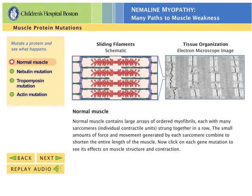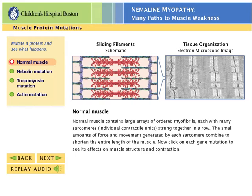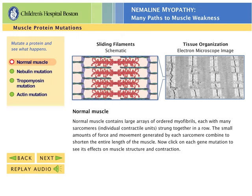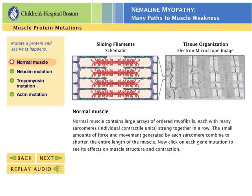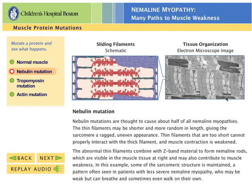Now click on the buttons to watch the thin filament in action, first in normal muscle, and then in patients with mutations causing nemaline myopathy. See how the three gene mutations affect the filament differently, yet all lead to weakened muscle contraction. In all three cases, also notice how the abnormal thin filaments and Z-bands have formed dark clumps called nemaline rods. These rods further interfere with the orderly structure needed for strong muscle contraction.